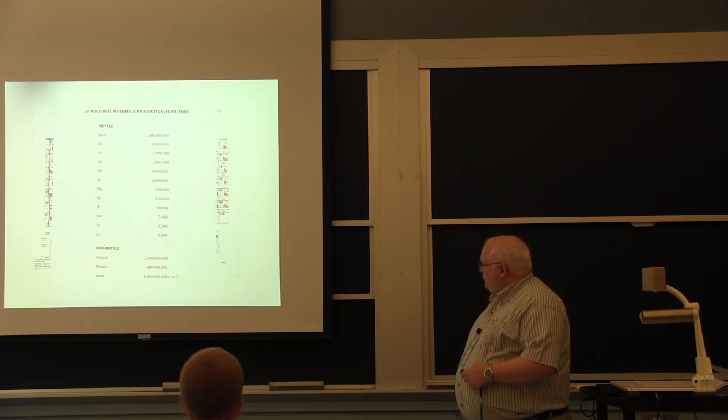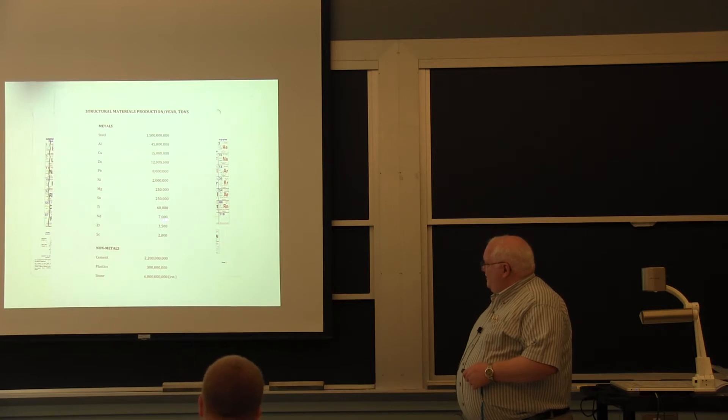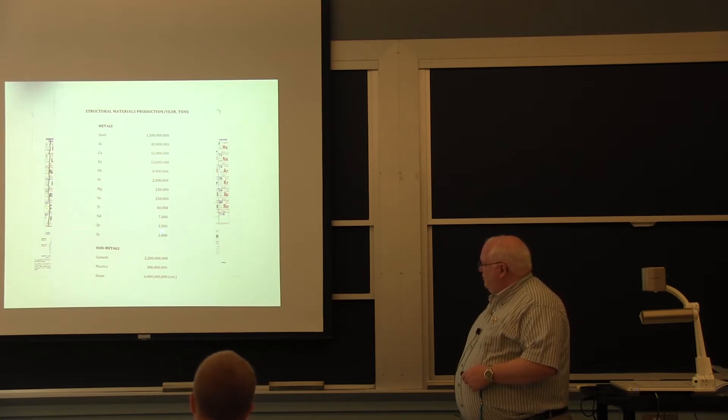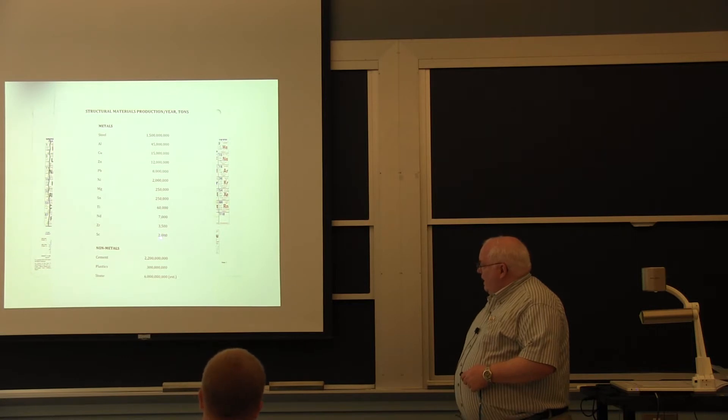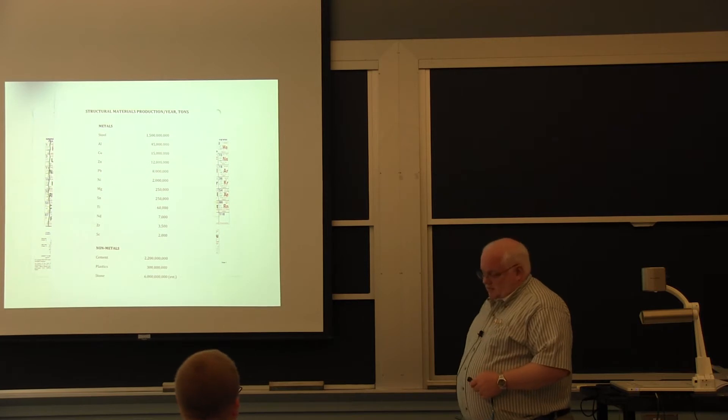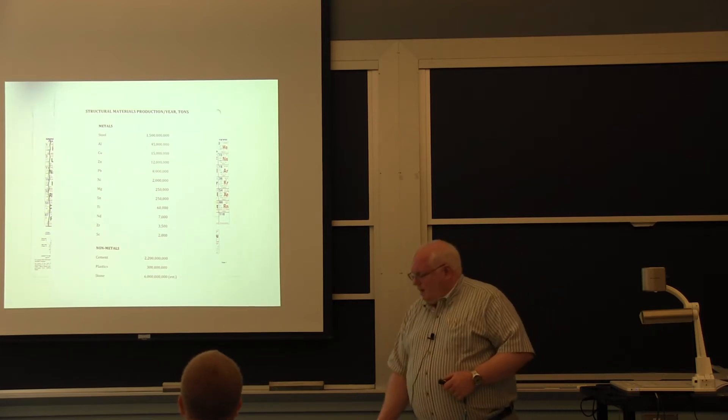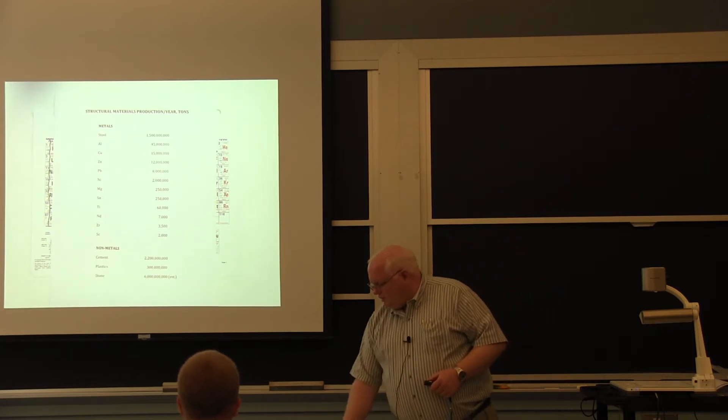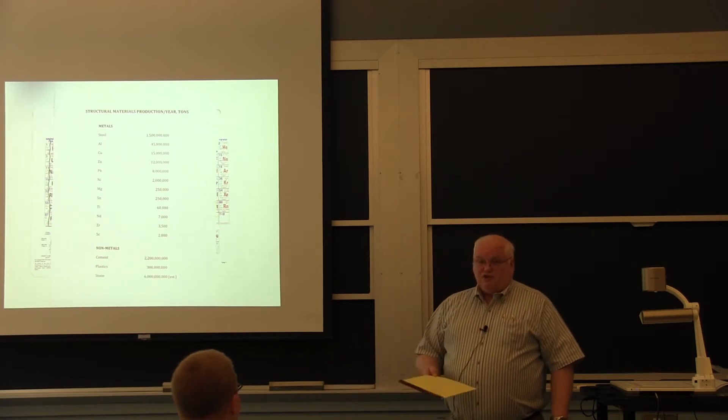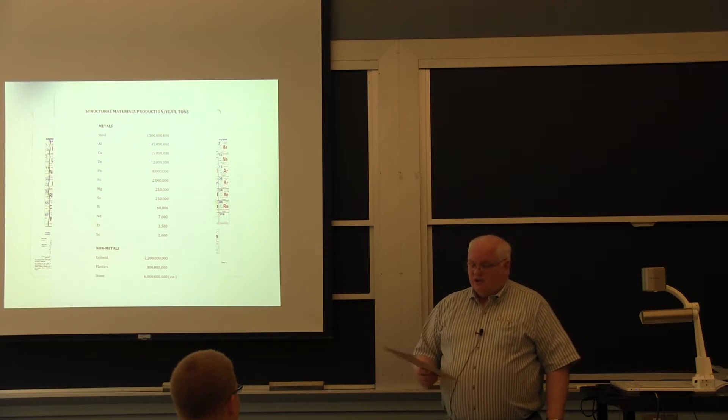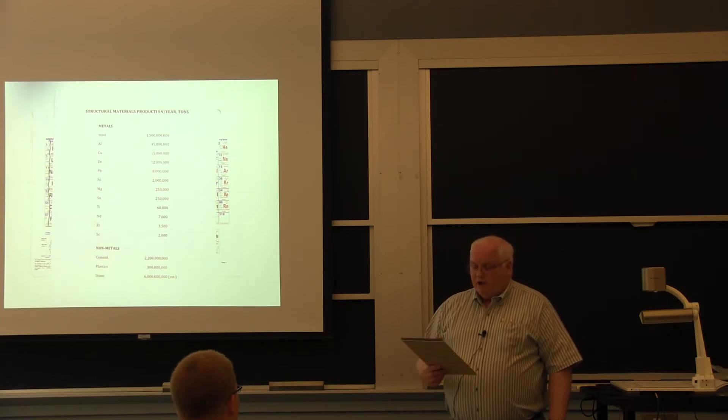Neodymium, which is obviously not a structural material, but we've talked about it, is 7,000 tons. Zirconium, which we'll talk about in a second, 3,500 tons. Scandium, which we talked about for baseball bats - it's basically an alloying element in aluminum, it's about the only application I know of - 2,000 tons. And I actually started doing it. Lithium is 600,000 tons, obviously not a structural material, but it's grown by a factor of six in the last 10 years for battery applications.